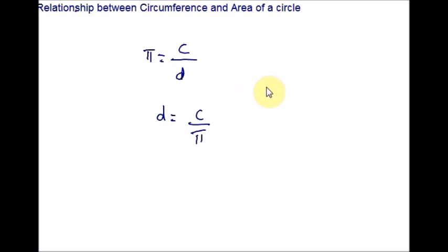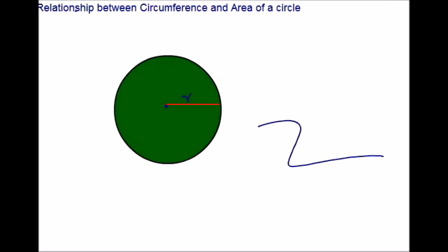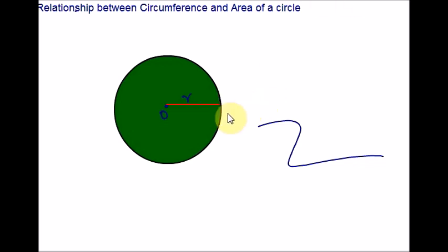Before finding the area of a circle, let us understand its perimeter. The perimeter of a closed figure is defined as the length of its boundary. For a circle, the perimeter is given a different name — it is called the circumference. Consider a circle with center O and radius r; the circumference equals the length of its boundary, like the rope that wraps around it perfectly.